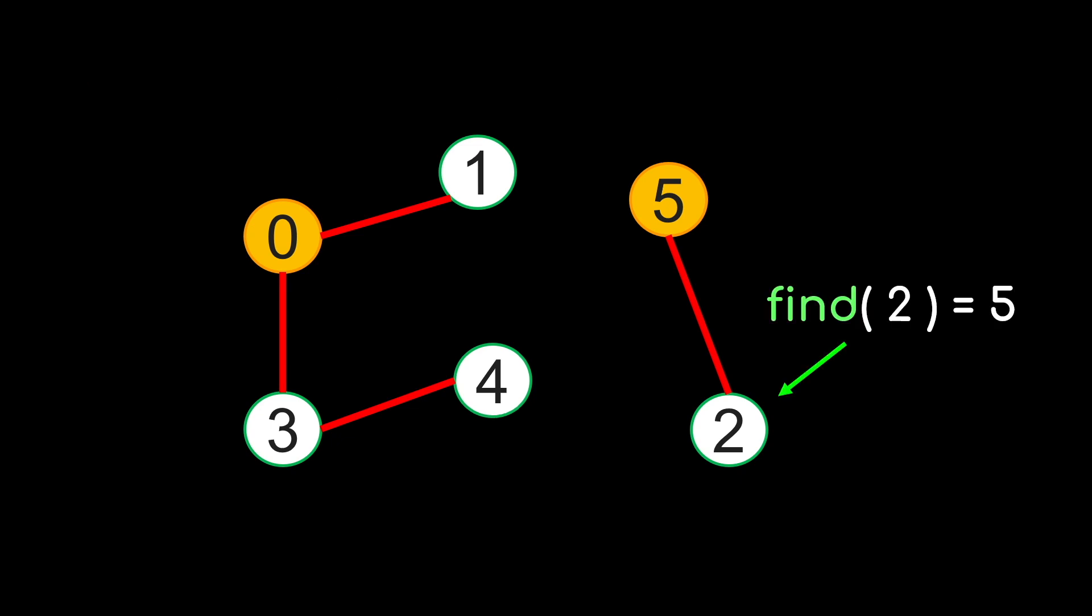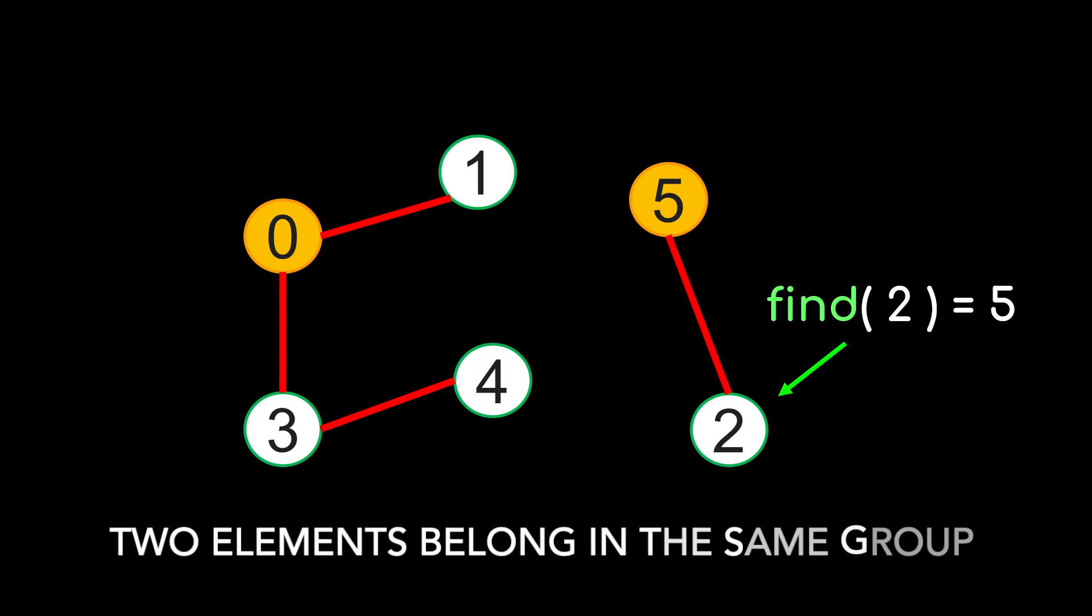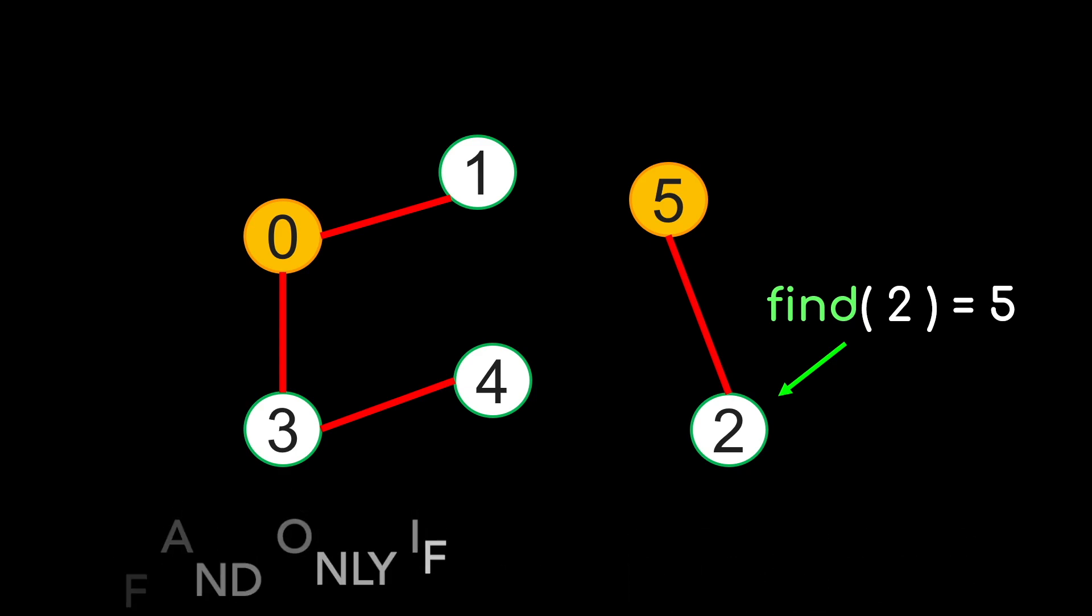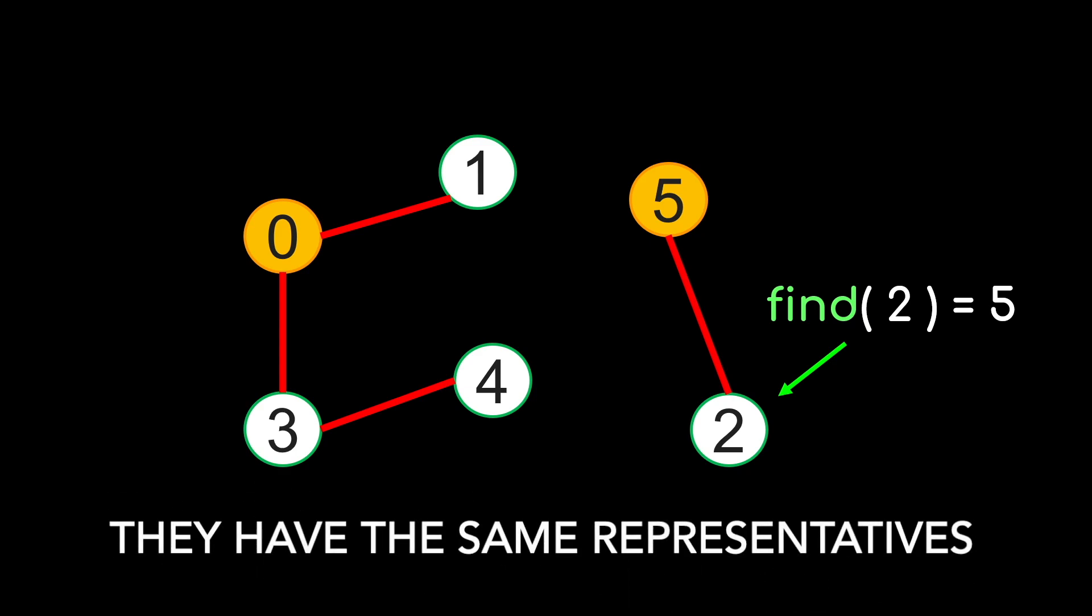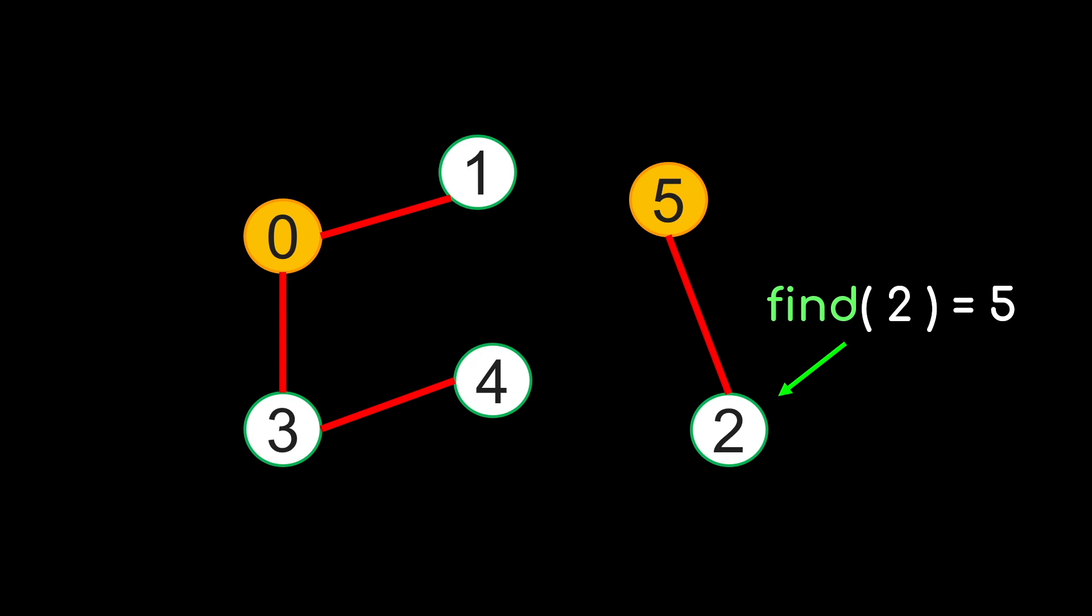As another example, when we call find of 2, we return the representative of the group 2 belongs to, which is 5. Notice that two elements belong to the same group if and only if they have the same representative. So the representative provides a way of checking if two elements belong to the same group.